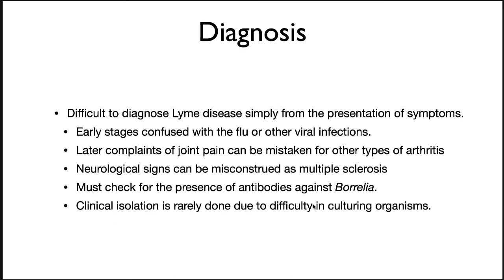It is difficult to diagnose Lyme disease simply from the presentation of symptoms. The early stages are confused with the flu or other viral infections. Late complaints of joint pain can be mistaken for other types of arthritis. Neurological signs can be misconstrued as multiple sclerosis — there are examples of individuals who were diagnosed with MS until a Lyme test revealed they actually had Lyme disease. You must check for the presence of antibodies against Borrelia. There is a good test for your body's immune response, and if you're positive it means you were exposed to Lyme disease. Clinical isolation of this organism is rarely done due to the difficulty of culturing the organisms.